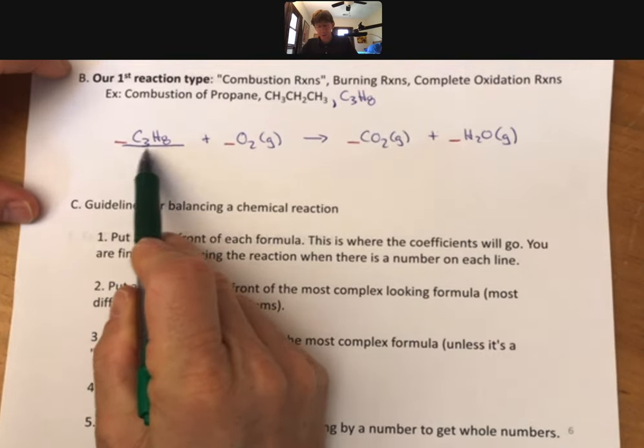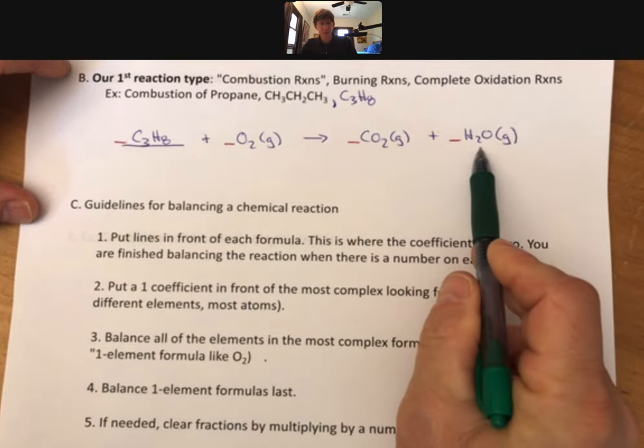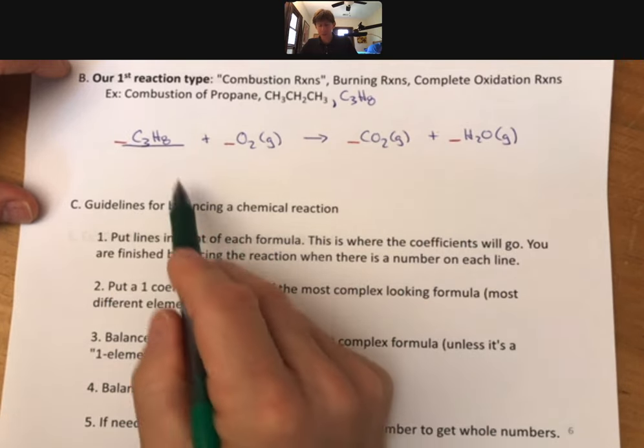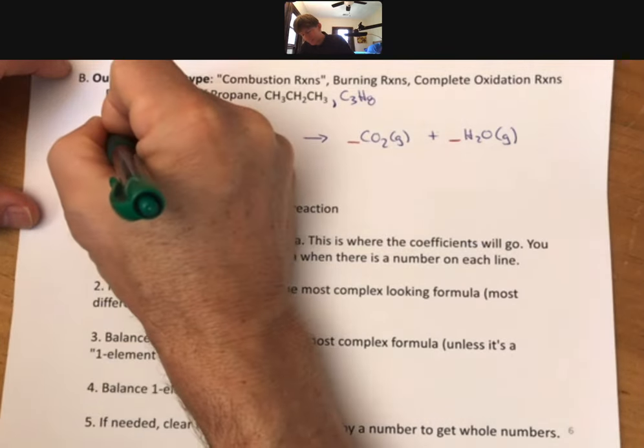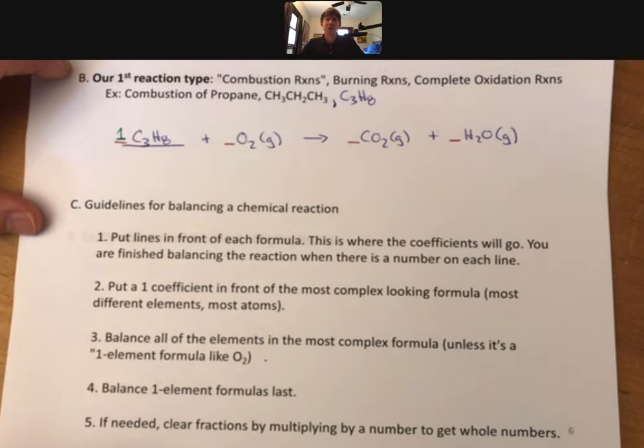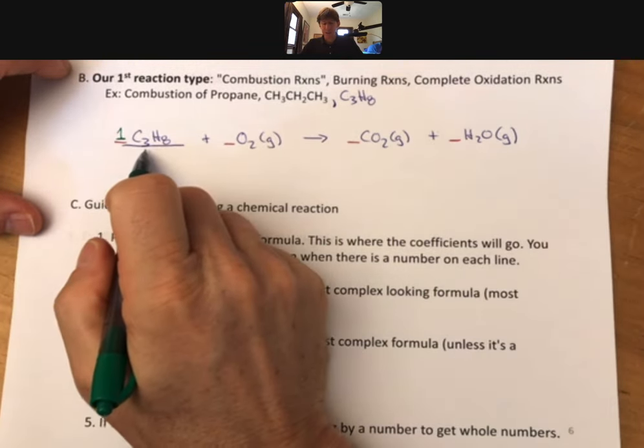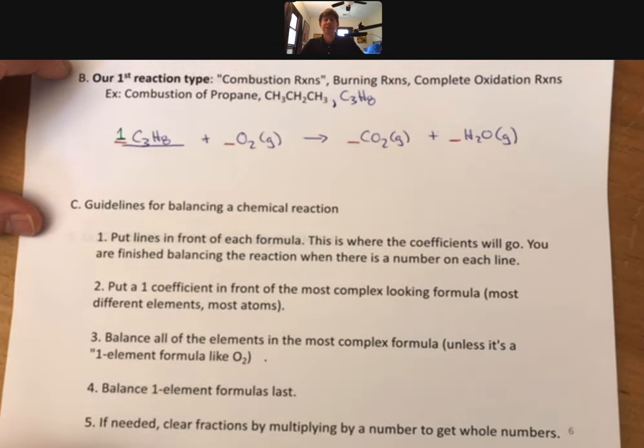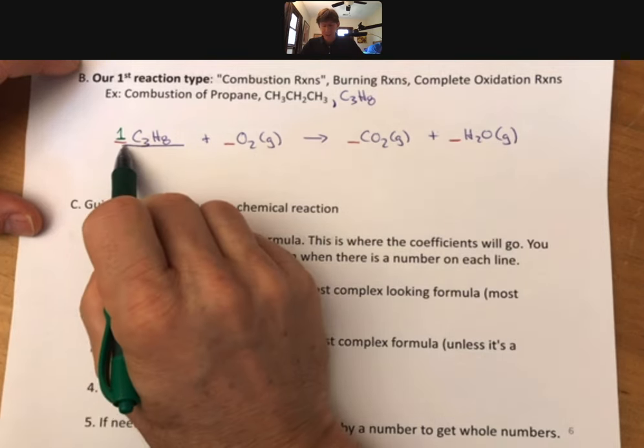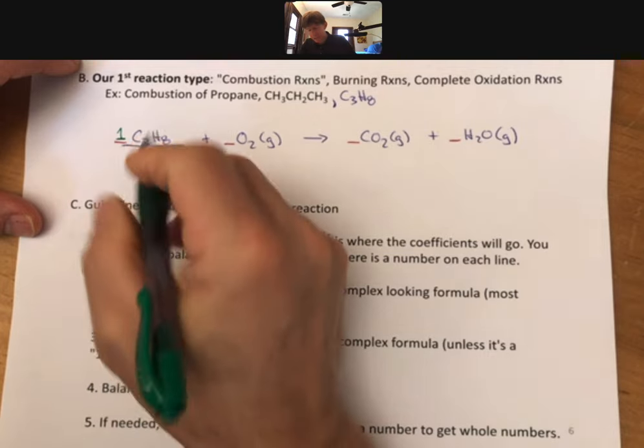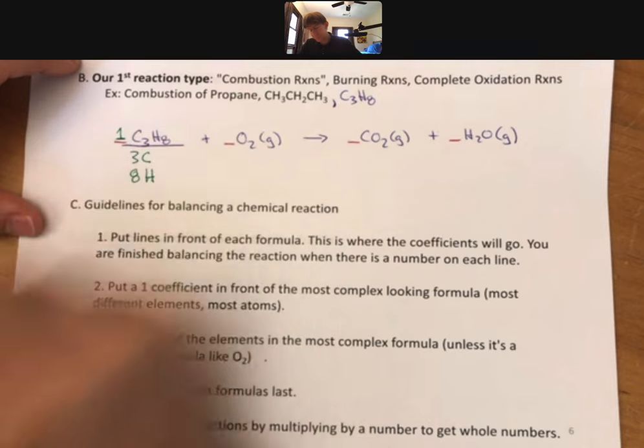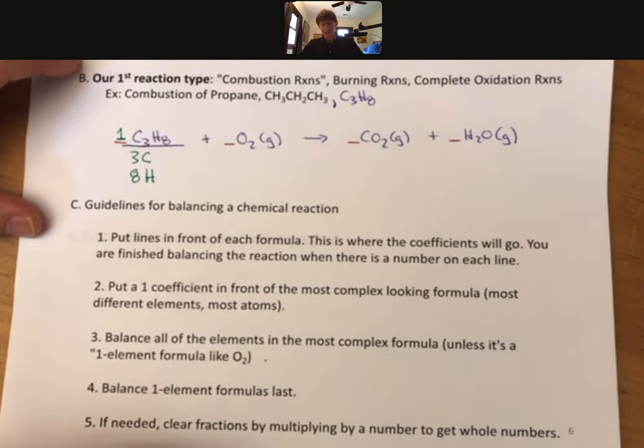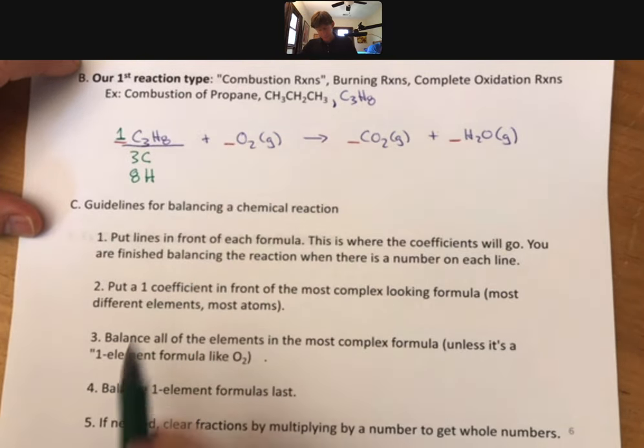So we have two elements here. Same thing on the product side. However, C3H8 has the most atoms and in combustion reactions almost always the thing that's going through combustion is the most complex. As soon as I have this one in front of this that means I actually have three carbons and eight hydrogens. And now we'll continue.